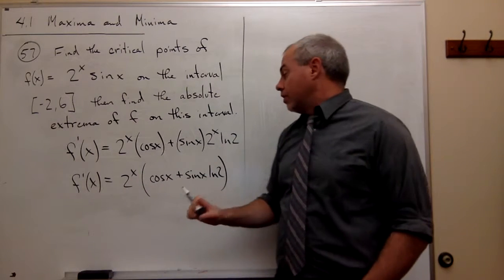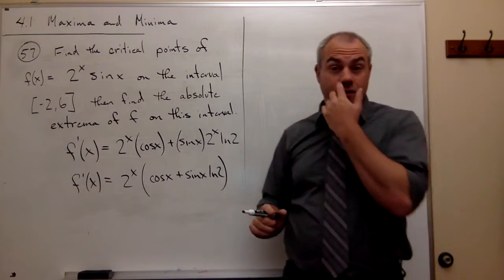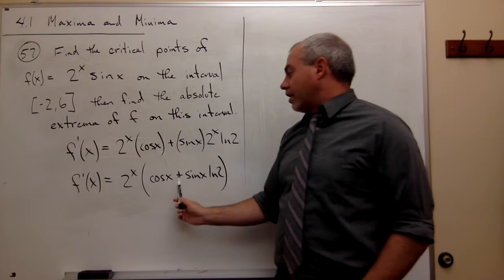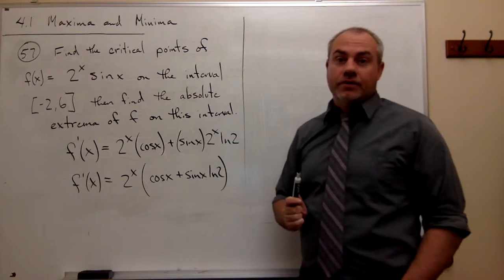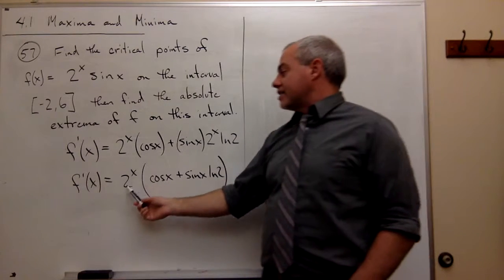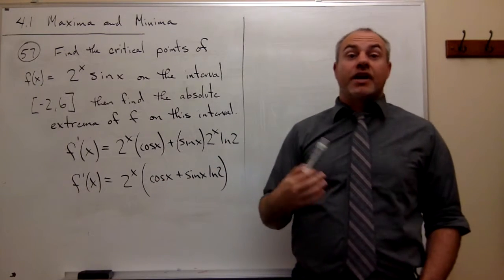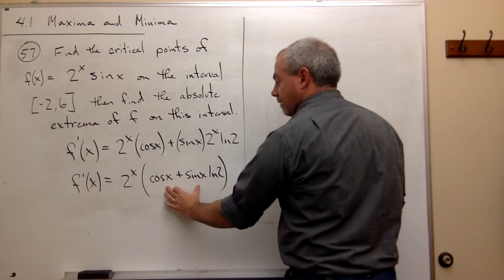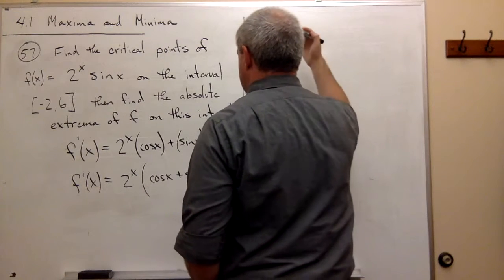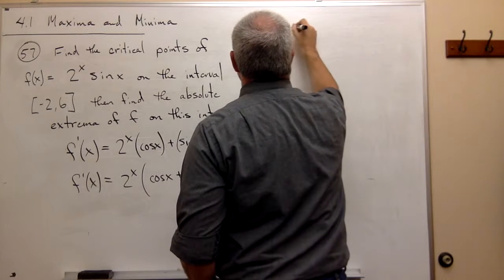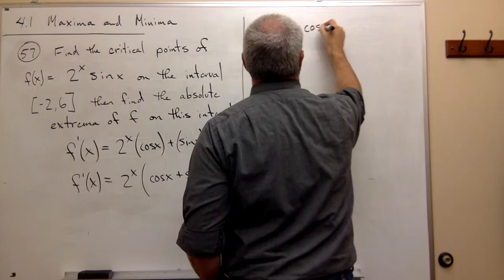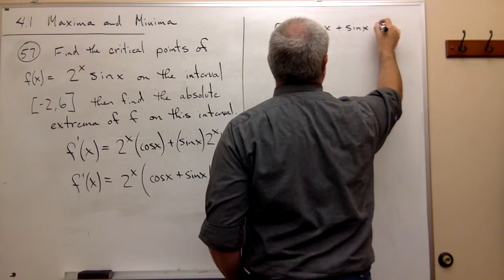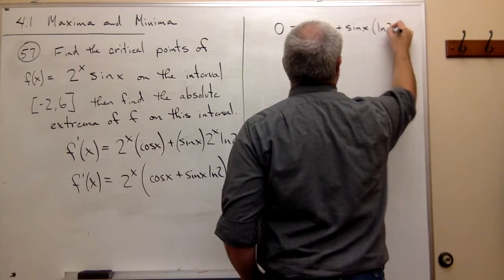Either 2 to the x is 0, or cosine plus sine times ln of 2 is equal to 0. Now, there's nowhere where 2 to the x is equal to 0. So 2 to the x is an exponential function. Exponential functions are never equal to 0. So we don't have to worry about 2 to the x being equal to 0. We just have to worry about this guy being equal to 0. So what I'll do is I will write that 0, then, would have to be equal to cosine of x plus sine x times the natural log of 2.